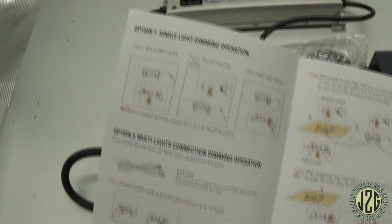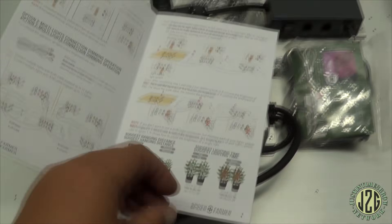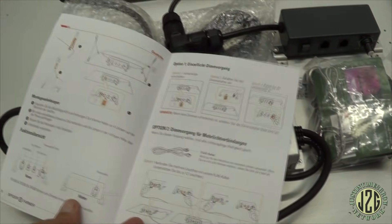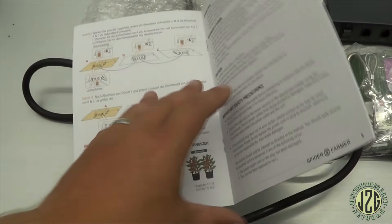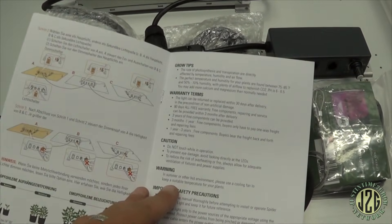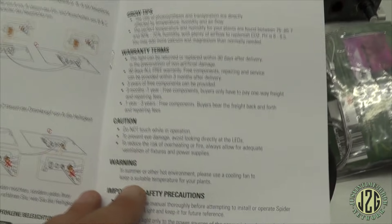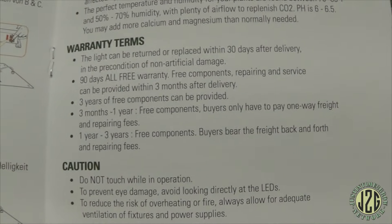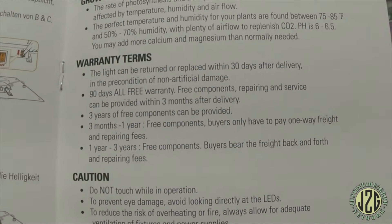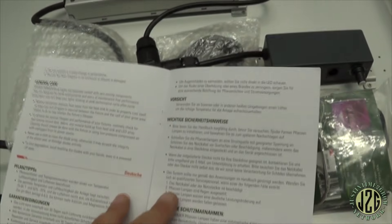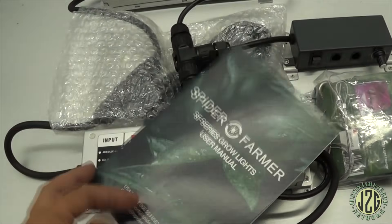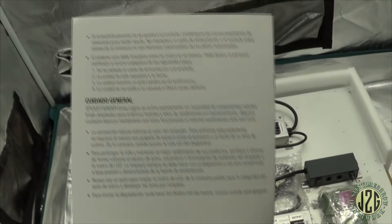More info about turning it off and on and the dimmer and the daisy chain, which this does actually have. The two thousand and the one thousand do not have that. Warranty - there's your warranty info, three years warranty total, pretty standard.